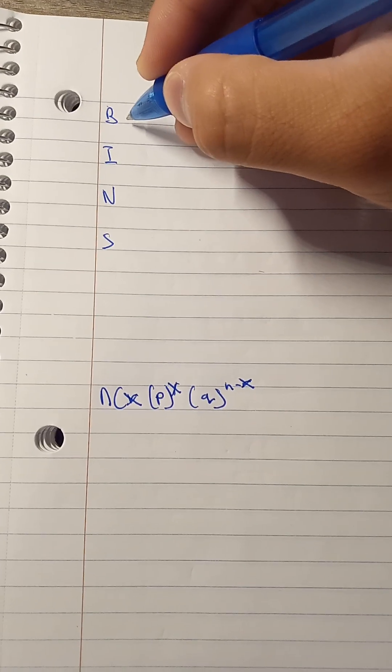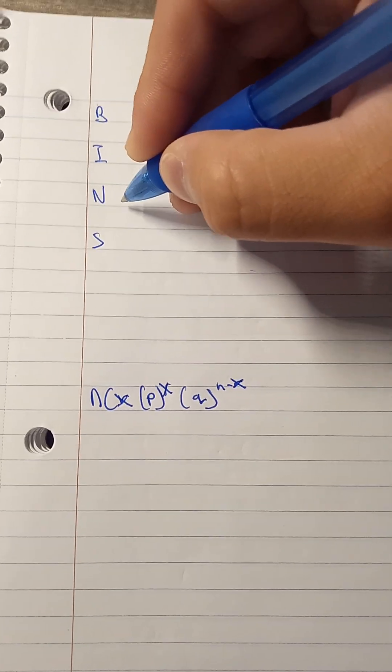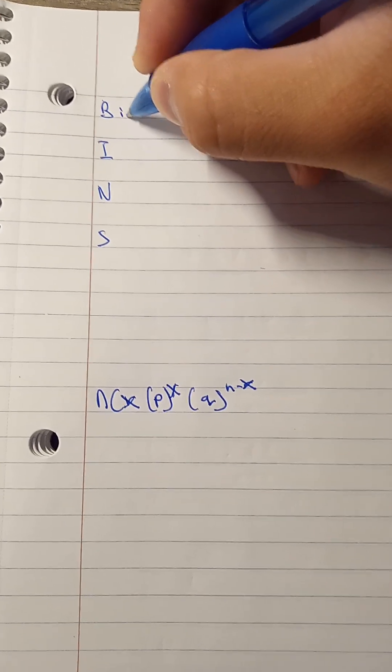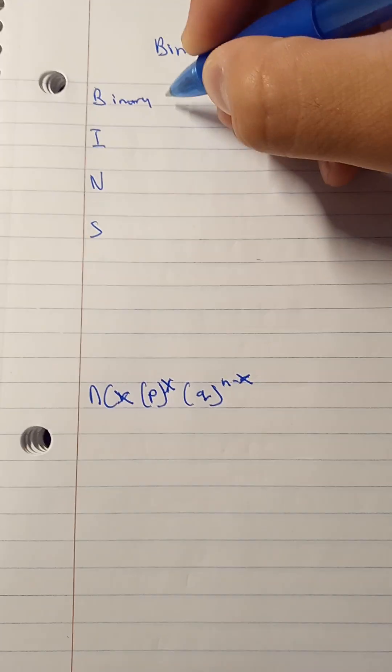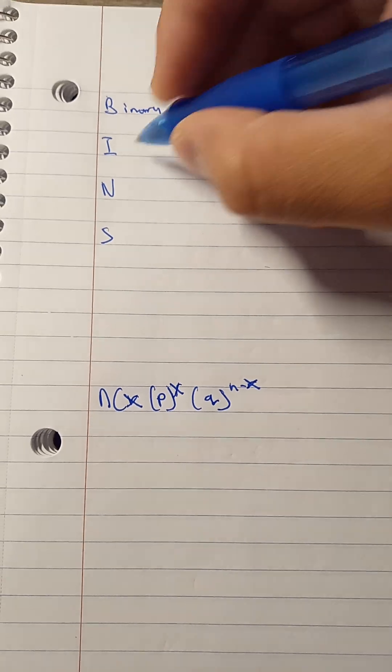We can use this acronym to remember what to do with binomial distribution. First is binary, which means that each trial can only result in a success or a failure.